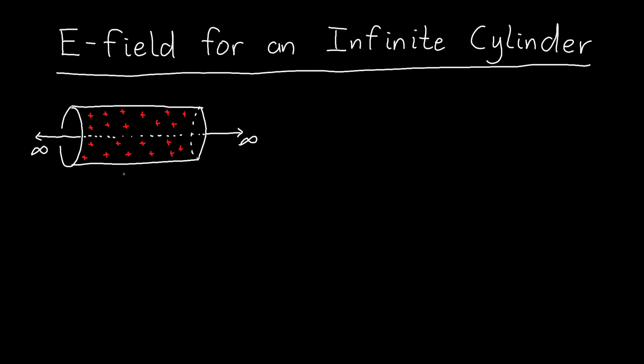So let's say that I have an infinite cylinder. Let's say that its radius is a. It's got some charge density rho inside it, and its permittivity is epsilon naught, the same as free space.